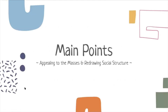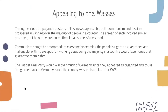Main points: appealing to the masses and redrawing social structure. Through various propaganda posters, rallies, newspapers, etc., both communism and fascism prospered in winning over the majority of people in a country. The spread of each involved similar practices, but how they presented their ideas successfully varied. Communism sought to accommodate everyone by deeming people's rights as guaranteed and inalienable. A working class majority would favor ideas guaranteeing them rights. The fascist Nazi party won over much of Germany, since they appeared organized and could bring back order after World War I left the country in shambles.